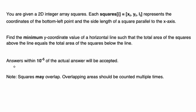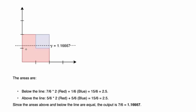One important note is that the squares may overlap, and if they do, the areas should be counted multiple times. Looking at this example, we have two squares: one with its bottom-left at (0,0) and a length of 2, and one with its bottom-left at (1,1) and a length of 1. These squares do overlap — the blue square overlaps with a portion of the red square — but when doing this calculation, we count the area of both. So overlapping regions are counted multiple times, and here the answer is 1.16667.